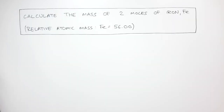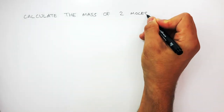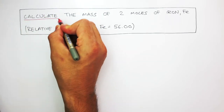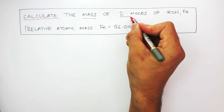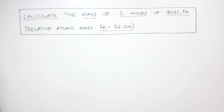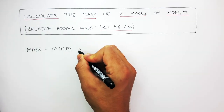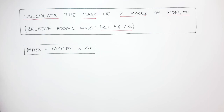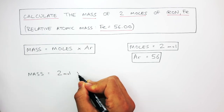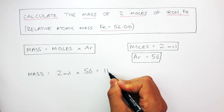Here's another exam-style question where you have to calculate the mass of 2 moles of iron, Fe. The question asks us to calculate the mass of 2 moles of iron, and the relative atomic mass is 56. The first thing we always do is write the equation: mass equals moles times AR. The moles equals 2 mole and the AR is 56, so mass equals 2 mole times 56, which equals 112 grams.